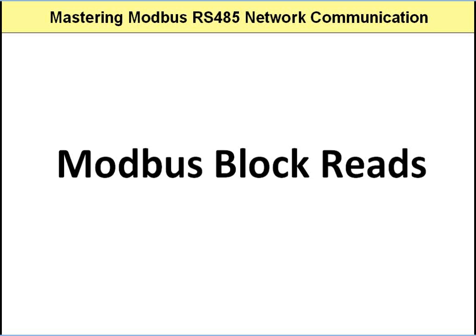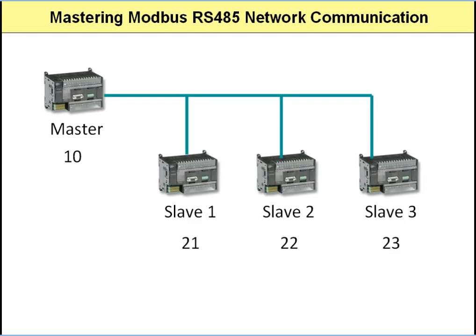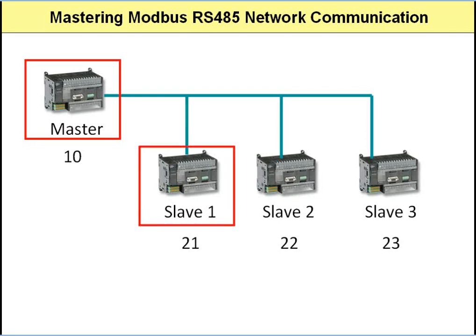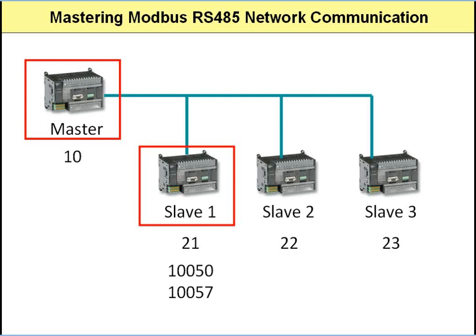Let's use an example to illustrate the point. We're seeing this from a previous example — a master with three slaves, and they have been assigned Modbus unit IDs. Let's say the Modbus master needs to read two memory blocks from the inputs memory area of slave one. The address of Modbus slave one is 21, and the memory addresses of the memory blocks to be read are 10,050 and 10,057.